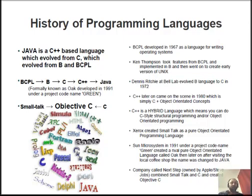A man named Ken Thompson took features from BCPL and implemented them in the B language, then went on to develop Unix. If you've heard of Linux, Linux comes from Unix — that's what they used to develop the Unix system in the early days. Then Dennis Ritchie, working at Bell Laboratories, evolved the B language and took it to C in 1972.